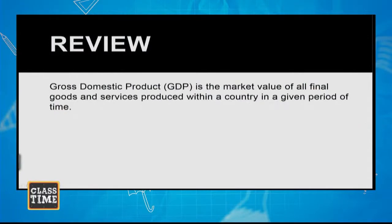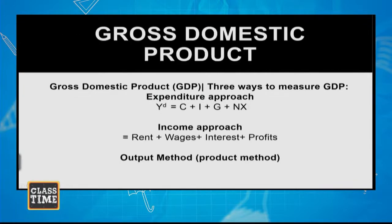GDP, or gross domestic product, looks at the market value of all final goods and services within an economy. You were also introduced to one way of calculating GDP. Last week we looked specifically at the expenditure approach, and the components for calculating GDP using that approach included consumption spending, investment, government spending, and net exports.